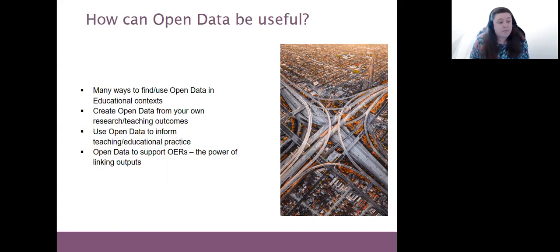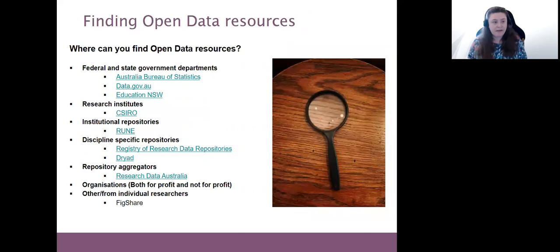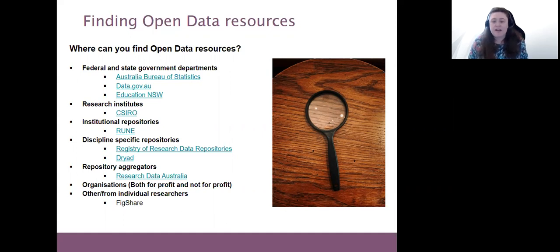Here's the road map of what we'll cover today. We'll talk about how to actually find open data, which is a pretty useful thing to know how to do. We'll also talk about how we can create open data from your own research or teaching outcomes, and we'll look at how open data can support OERs and the power of linking all your research outputs together. So first of all, finding open data resources. There are so many places you can go to find open data resources, depending on who generates it — and that's probably the hardest part, figuring out where they're going to be kept depending on who's created the data sets.